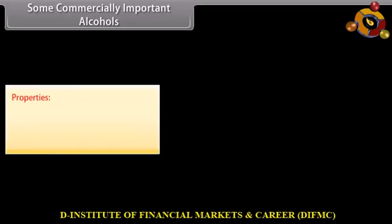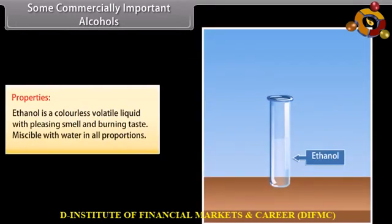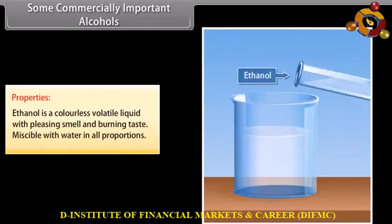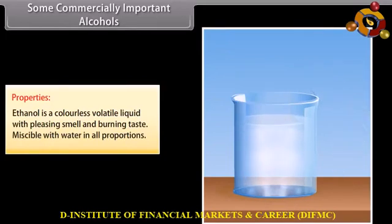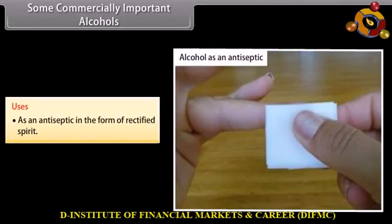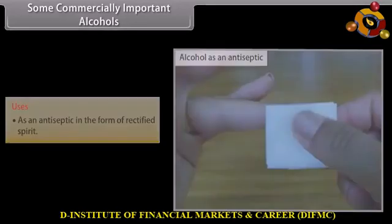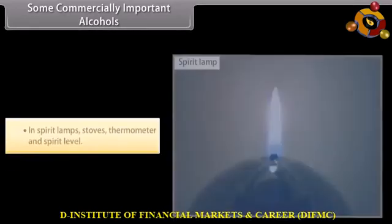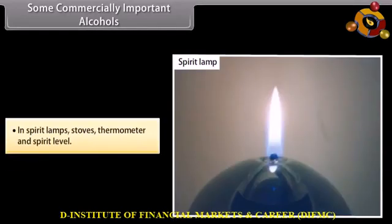Properties of ethanol: it is a colorless, volatile liquid with a pleasing smell and burning taste, miscible with water in all proportions. Uses: as an antiseptic in the form of rectified spirit; as an antifreeze in automobile radiators; and in spirit lamps, stoves, thermometers and spirit levels.